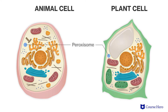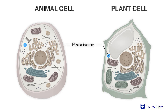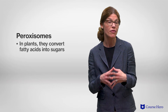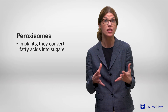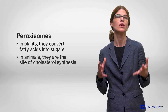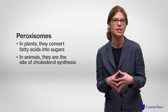Peroxisomes are small membrane-enclosed organelles that are found in virtually all eukaryotic cells. They contain enzymes that are involved in many different metabolic reactions. For example, in plants they convert stored fatty acids into sugars, and in animals they are the site of cholesterol synthesis.